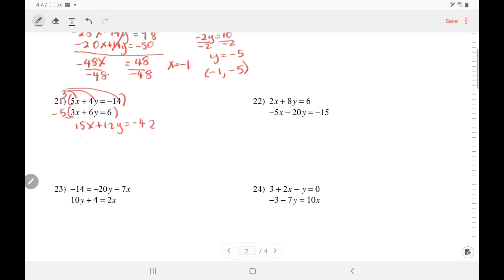Distribute the negative 5, get negative 15x, negative 30y equals negative 30. Add so that opposites cancel. This will give me negative 18y equals negative 72. When you add two negatives, it got even more negative. Divide. y equals positive 4.